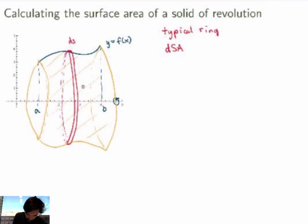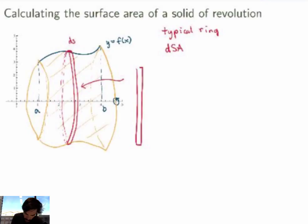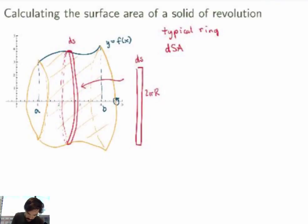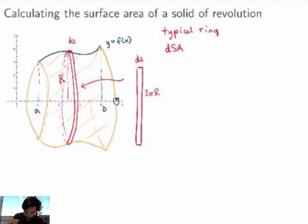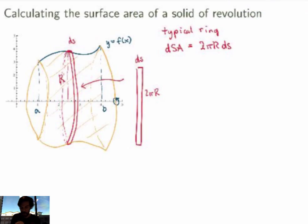What is the area of a typical ring? If you cut the ring open, you end up with a rectangle. The width of the rectangle is ds, the length of the line segment. The height of the rectangle is the circumference of the ring, which is 2πr, where r is the radius — the distance between the curve and the axis of rotation. So the area of the ring is 2πr times ds.